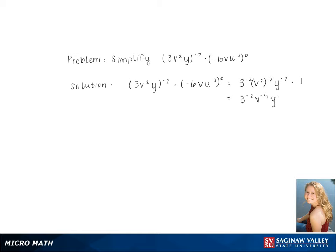Simplifying gives us 3 to the negative 2, v to the negative 4, y to the negative 2. Moving the exponents to the bottom of the fraction to make them positive, we get 1 over 9v to the 4th y squared.